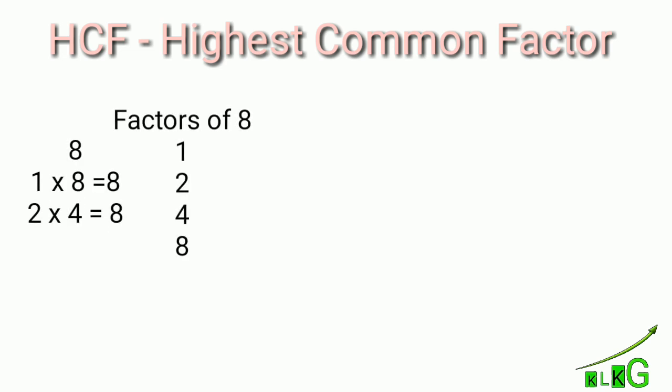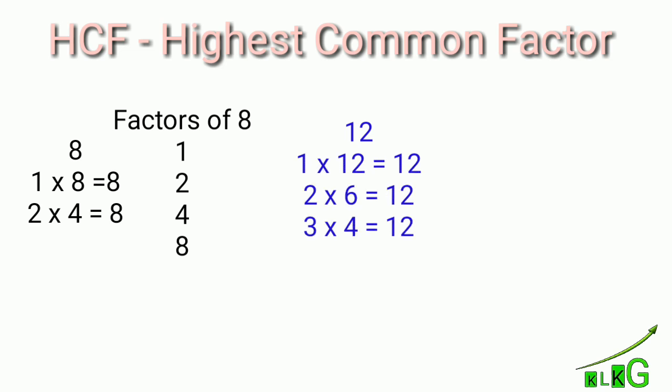Another example: the number twelve. In which tables does twelve appear? One times twelve is twelve, two times six is twelve, three times four is twelve, four times three, six times two, and twelve times one are also twelve. So overall we get the numbers one, two, three, four, six, and twelve — these numbers are the factors of twelve.